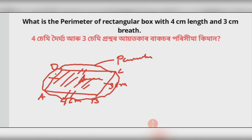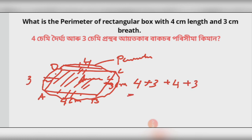Perimeter. So we calculate the perimeter. The sides are: this is 3, this is 4, this is 4, and this is 3. So this is 3 and this is the answer. The answer is 14cm. So the perimeter is the sum of all sides, the same as going around the shape.